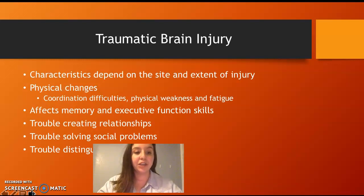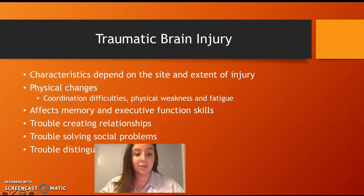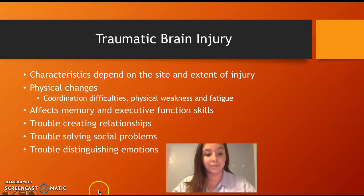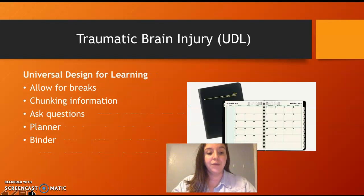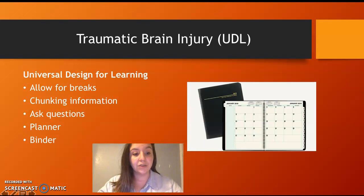Traumatic brain injury characteristics depend on the site and extent of the injury. Physical changes include coordination difficulties, physical weakness, and fatigue. It also affects memory and executive functioning skills, creating trouble building relationships, solving problems, and distinguishing emotions. Accommodations include allowing breaks, chunking information so they don't feel overwhelmed, asking questions to ensure they're following along, using a planner for executive functioning skills, and a binder to stay organized.